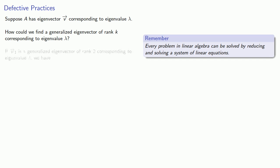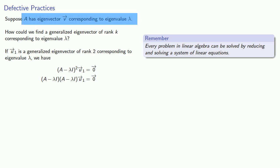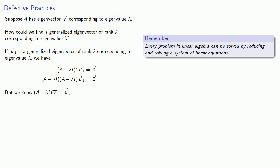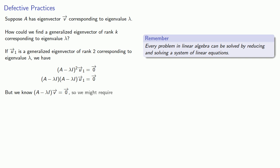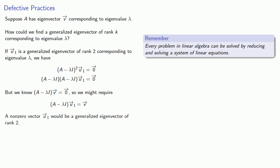If u1 is a generalized eigenvector of rank 2 corresponding to eigenvalue lambda, we must have (A - λI)² u1 giving us the zero vector. We can write that as (A - λI) times (A - λI) u1. Now remember v is an eigenvector corresponding to eigenvalue lambda, so we know that (A - λI)v gives us the zero vector. So we might require that (A - λI) applied to u1 gives us the eigenvector v, making u1 a generalized eigenvector of rank 2.